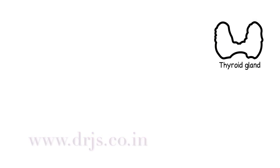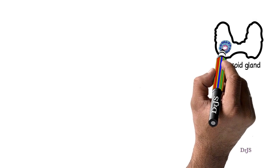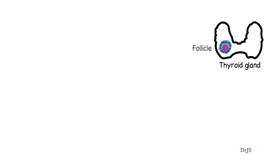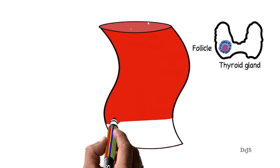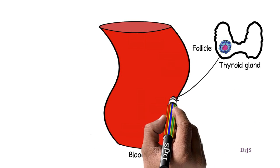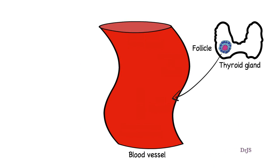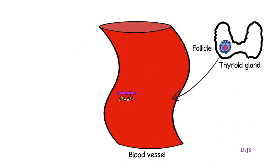Hello friends. As I have already told you in detail how the thyroid follicle of the thyroid gland synthesizes the T3 and T4 hormones, these hormones are then secreted into the blood from the follicular cells.